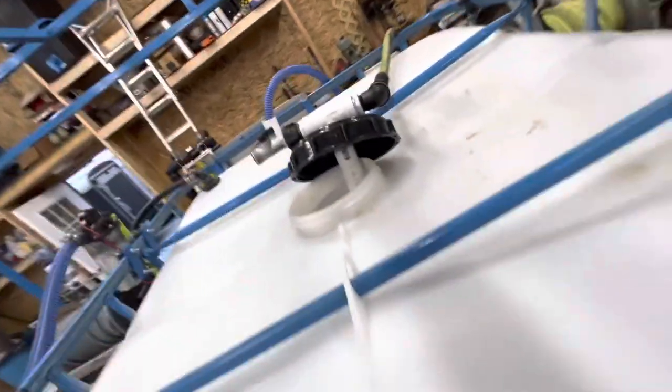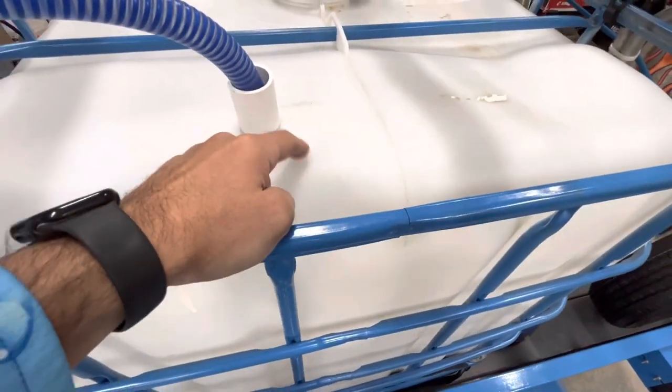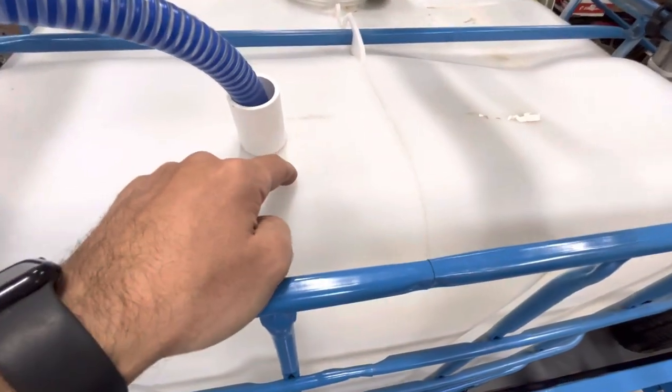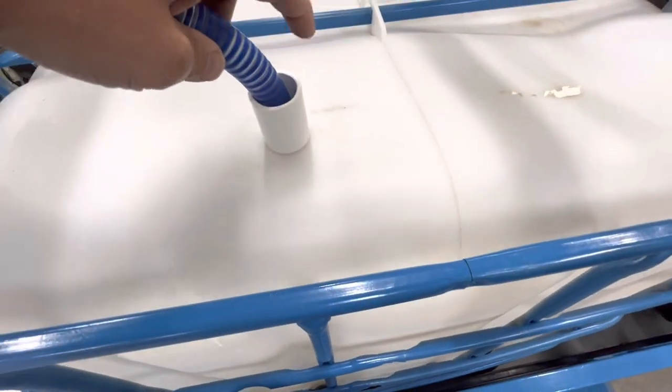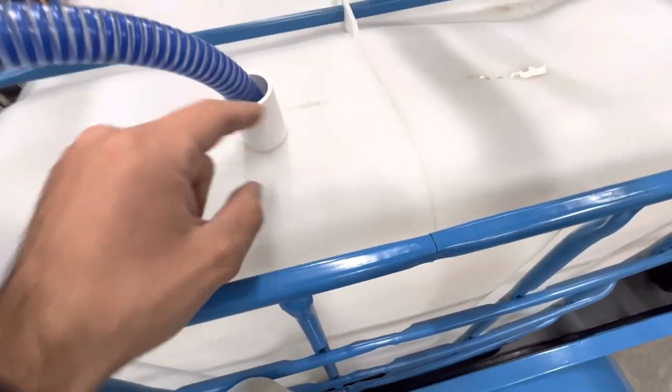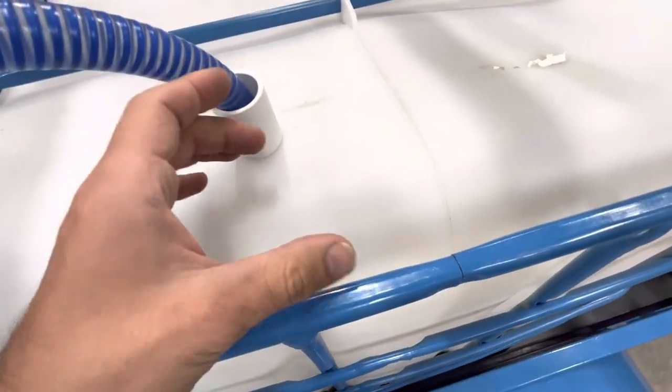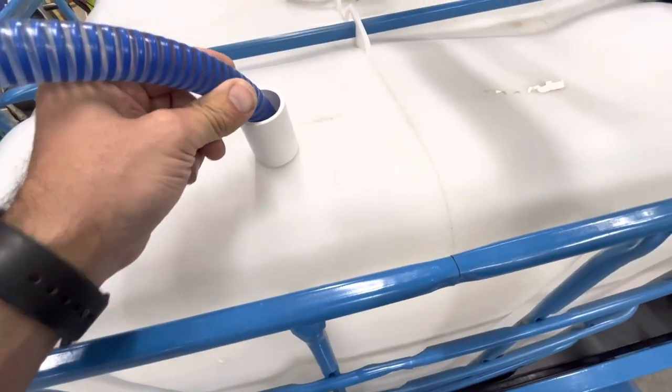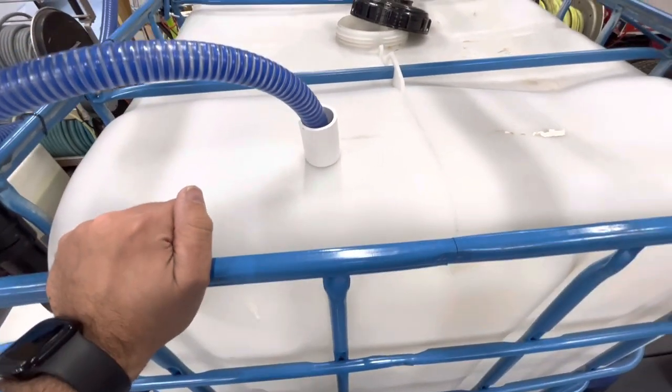There is another method that you can do, that some people do, is they'll bore a hole just smaller than the outer diameter of their hose into their tank. They will heat that up really hot with a heat gun, and then they'll actually press this into it so that it kind of flares around as it's being pressed in. And as it cools and contracts, it locks it in place. So that would be a useful way as well, especially if you're traveling with your tanks full.